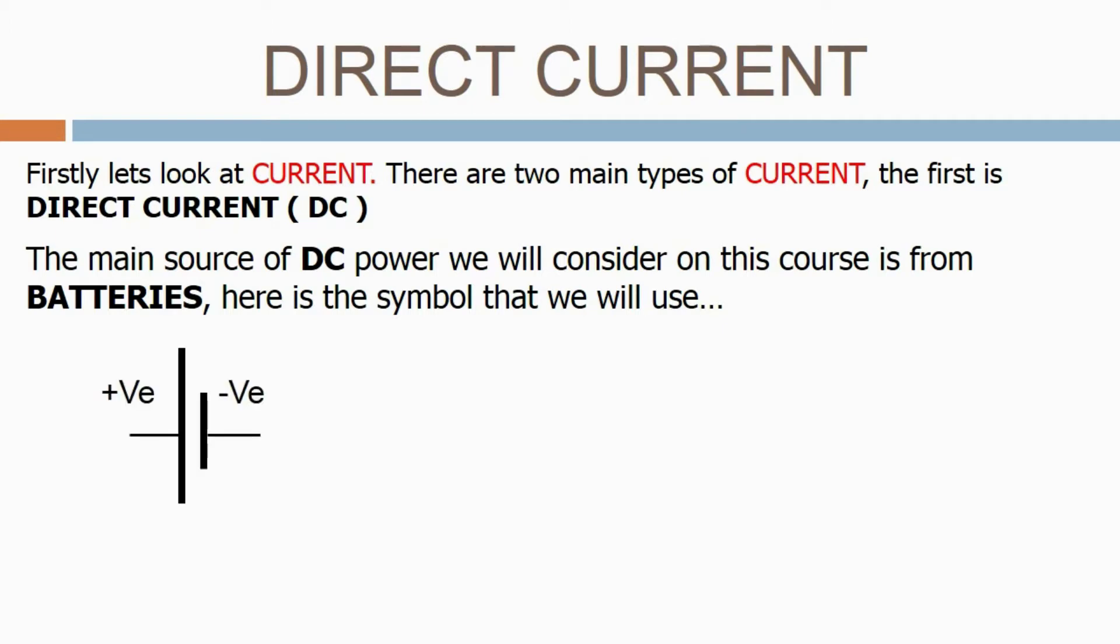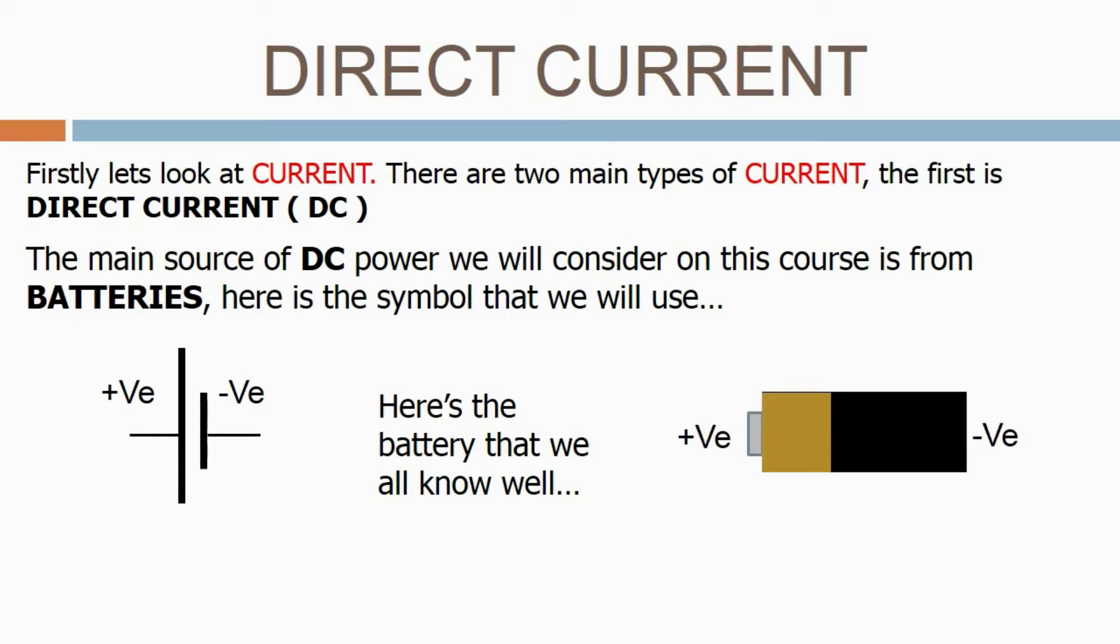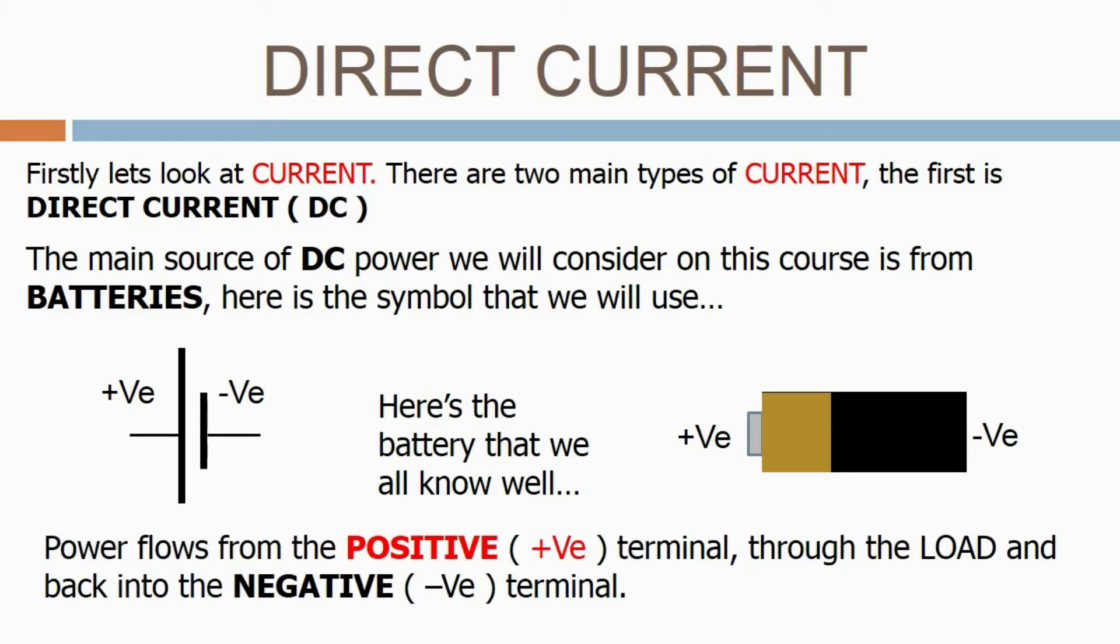Simply two parallel lines. The long line is the positive terminal and the short line is the negative terminal. Here's the battery that we all know well. Again, it has a positive and a negative terminal. Power flows from the positive terminal through the load and back into the negative terminal.